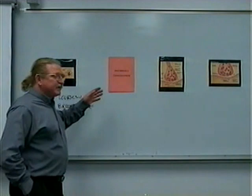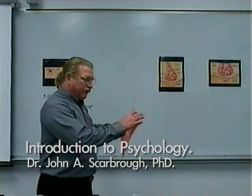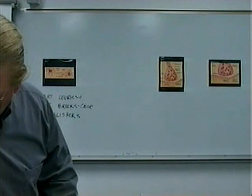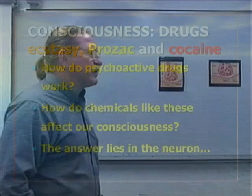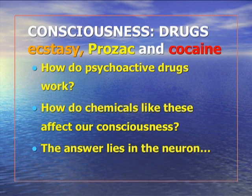We're going to talk about some specific aspects of the psychology of consciousness today, particularly about how drug use — specifically recreational drugs that can cause real damage and serious troubles — affects the brain. We're going to look at ecstasy and its relationship to Prozac, an antidepressant, and then we're also going to look at cocaine.